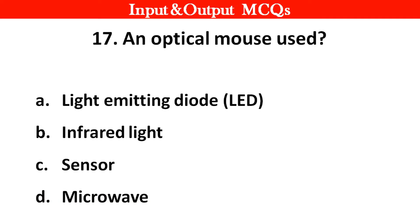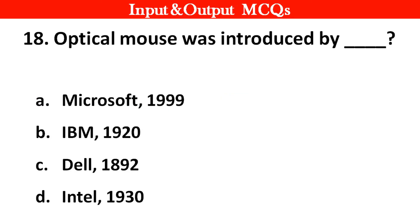Next question. An optical mouse is most used with dash. Right answer is option A: Light emitting diode. Next question. Optical mouse was introduced by dash. Right answer is option A: Microsoft, 1999.